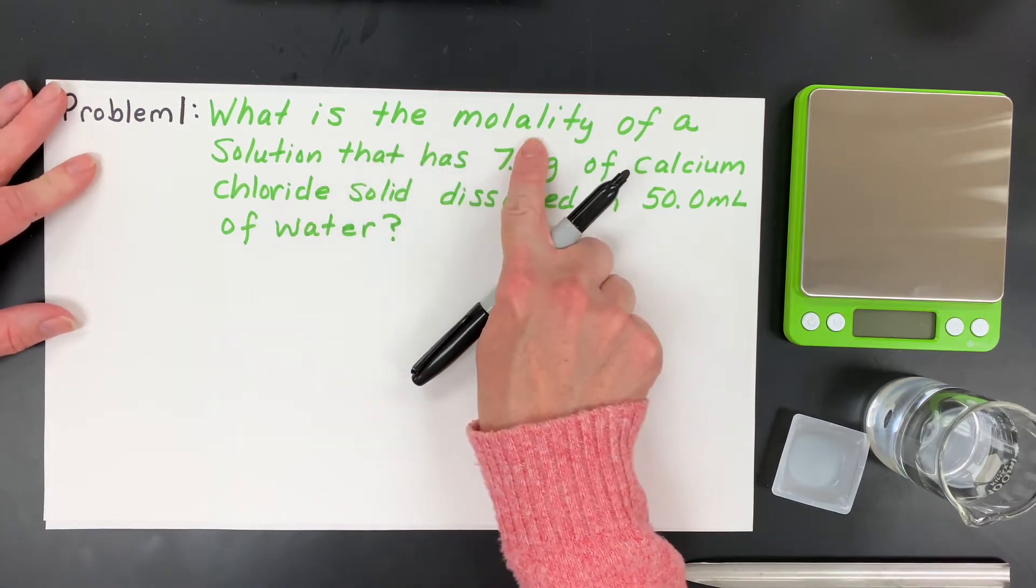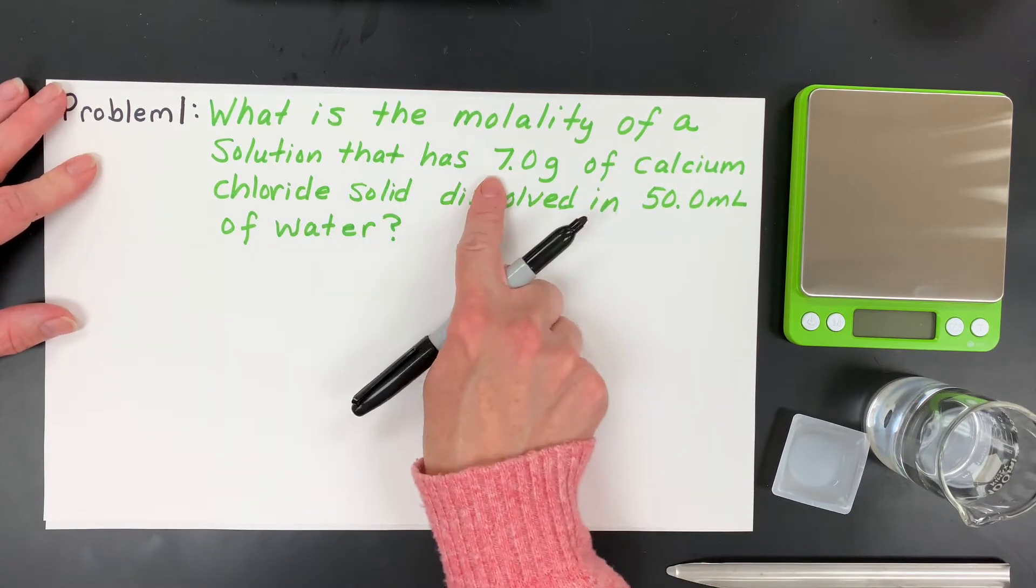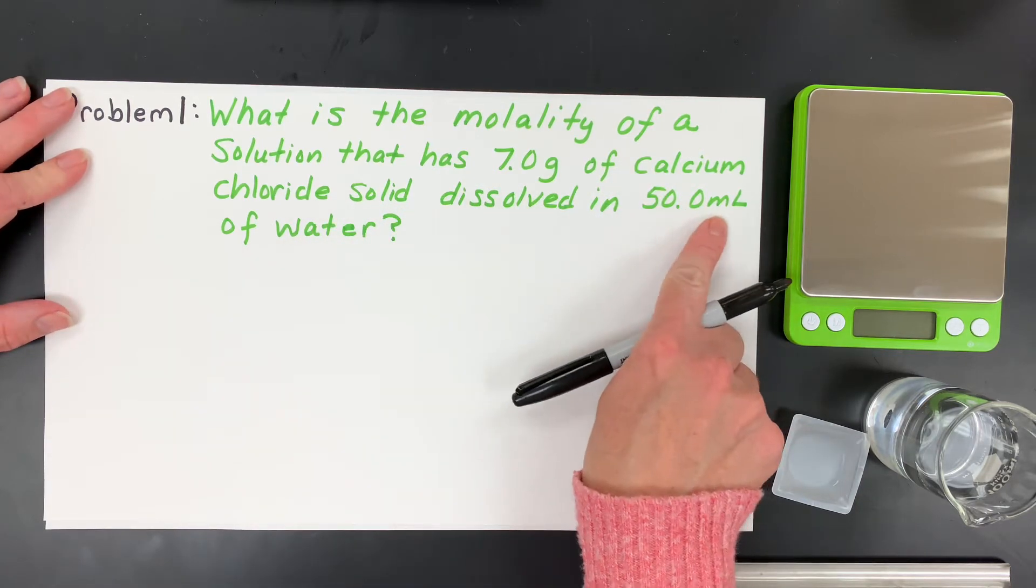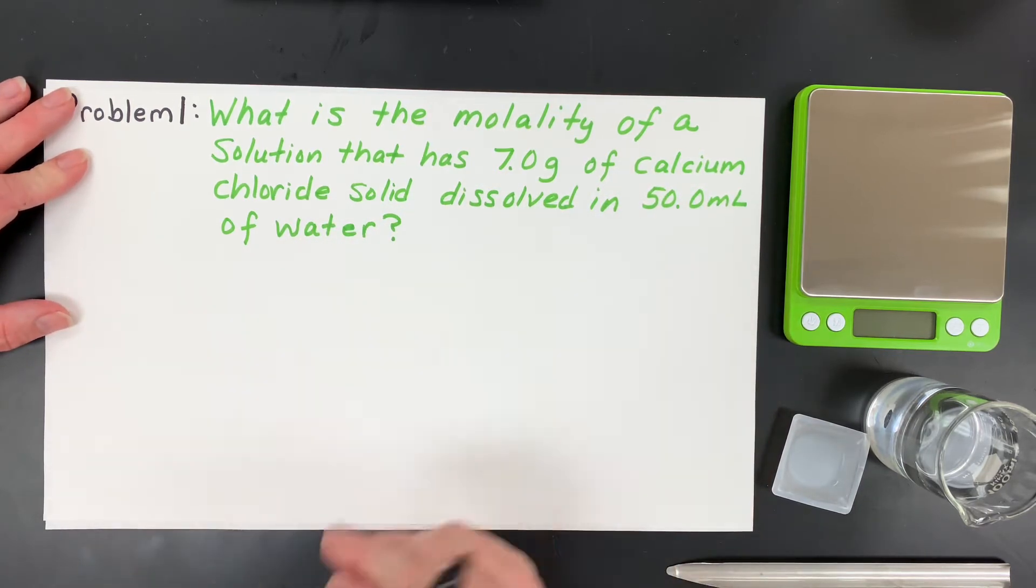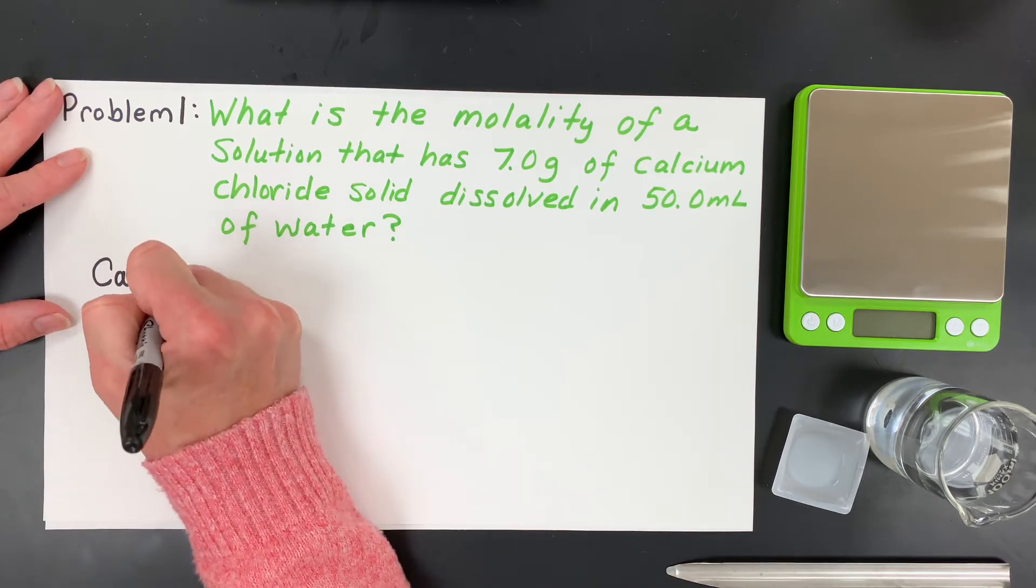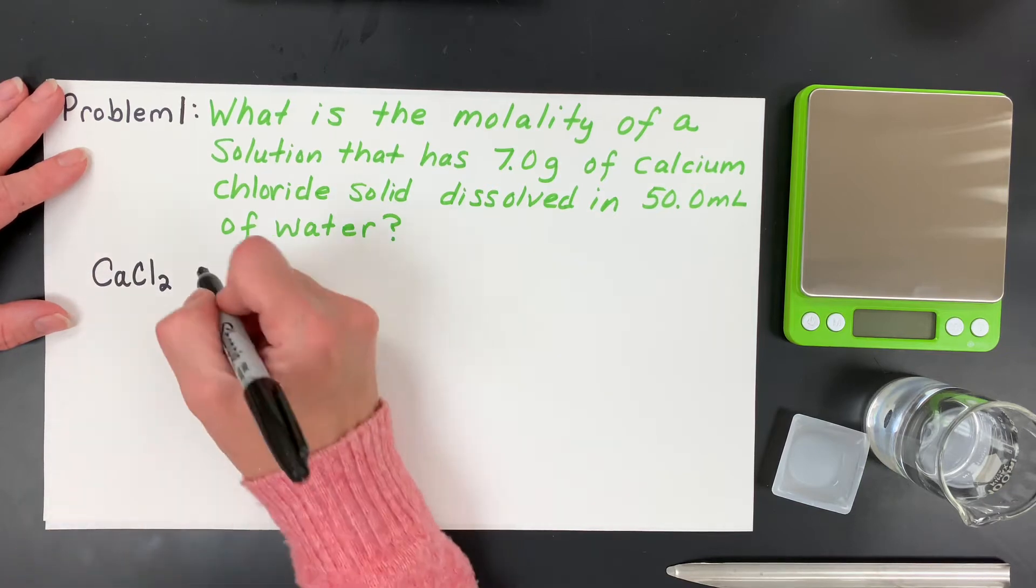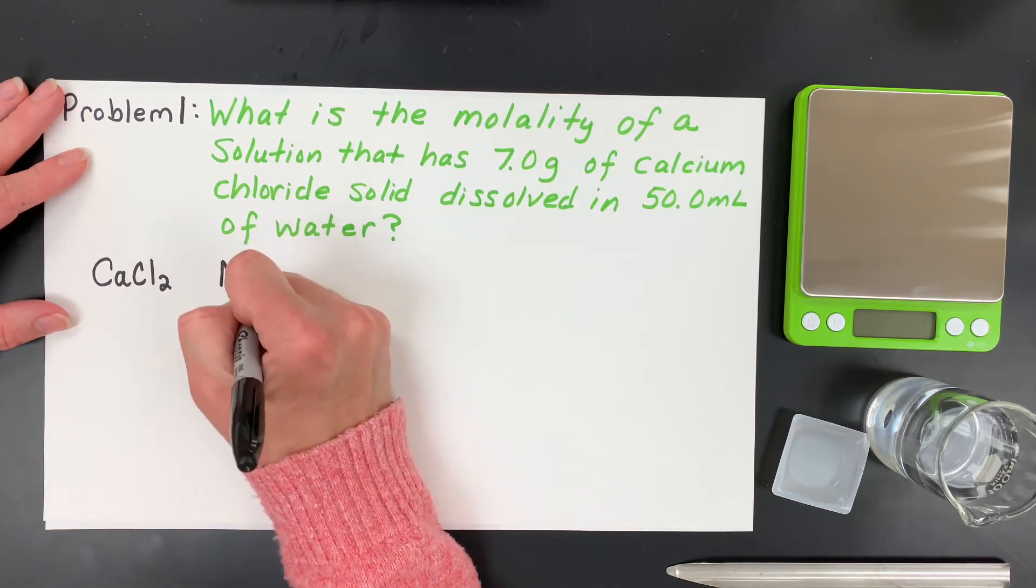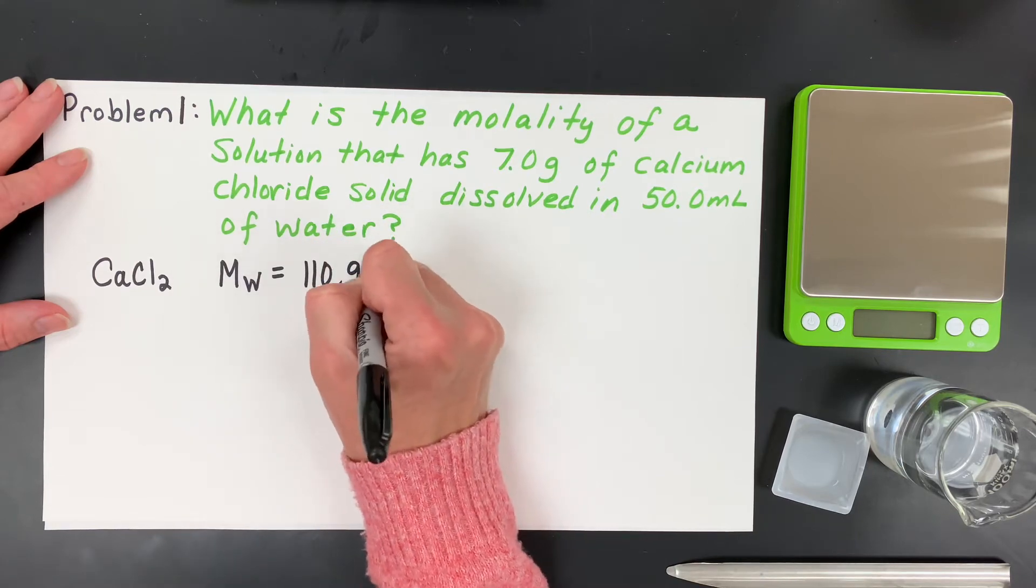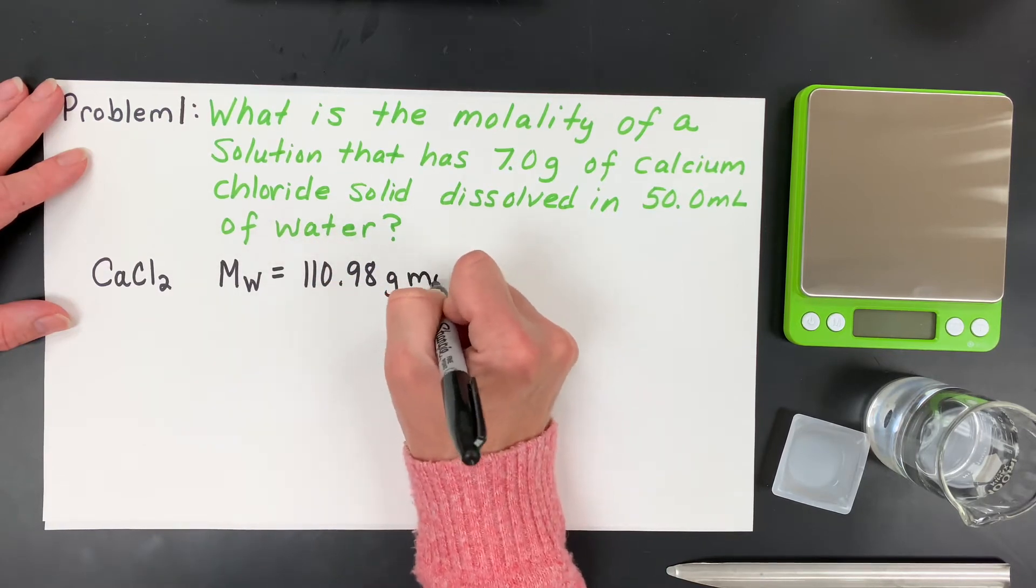If we want to find the molality of a solution that has 7 grams of calcium chloride solid dissolved in 50 milliliters of water, we have a couple things going on. First, we have to know that calcium chloride is CaCl2, and that solid has a molar mass of 110.98 grams per mole.